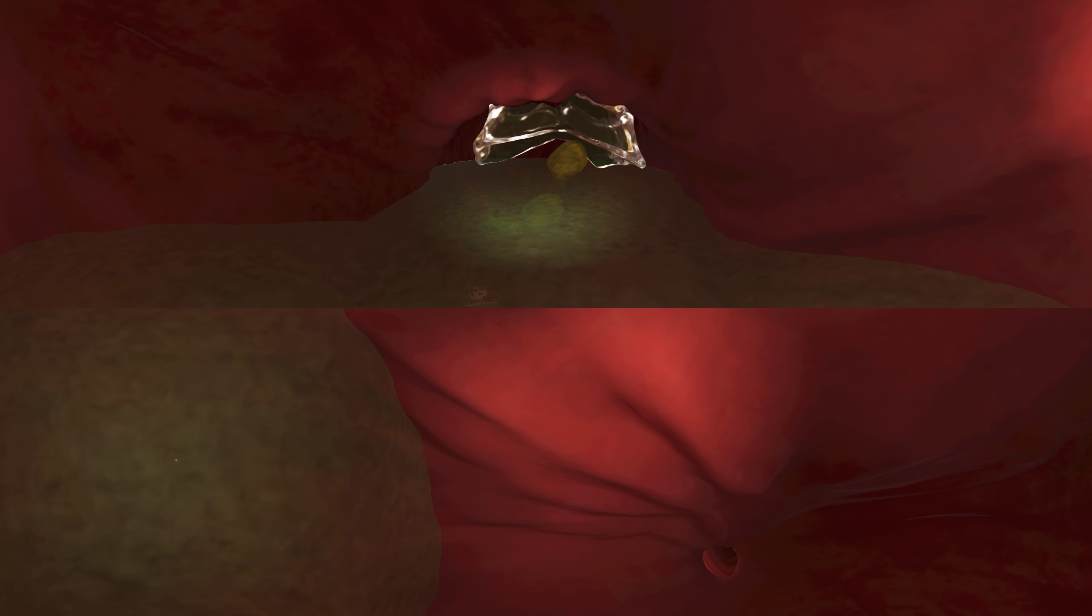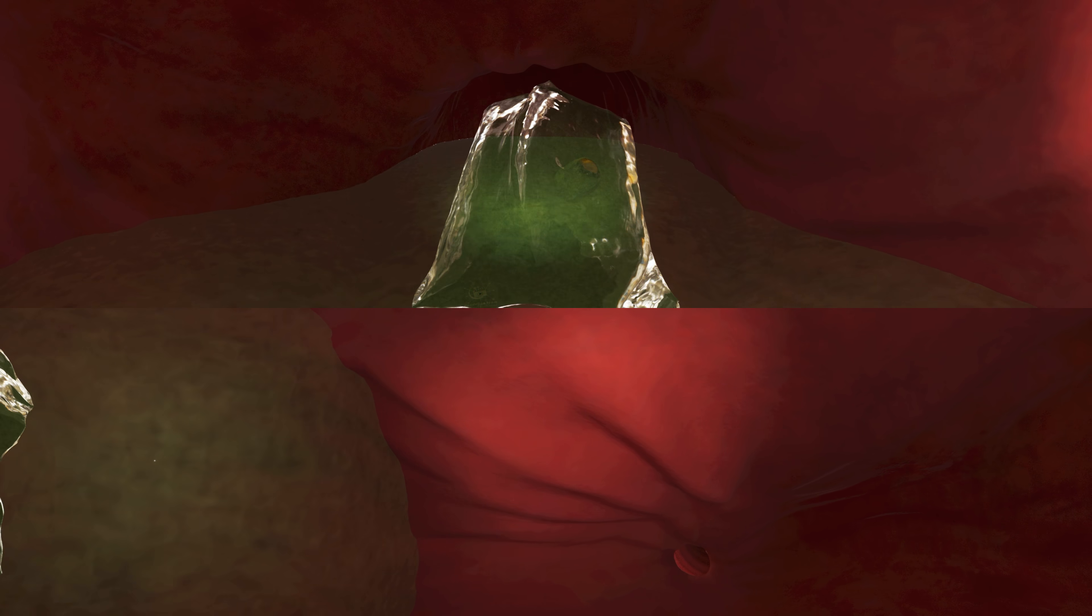The food then enters the stomach, which is a rounded hollow J-shaped organ located between the esophagus and the duodenum. The stomach has three mechanical tasks to do. First, the stomach must store the swallowed food and liquid. This requires the muscle of the upper part of the stomach to relax and accept large volumes of swallowed material.